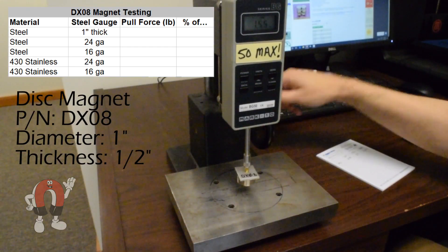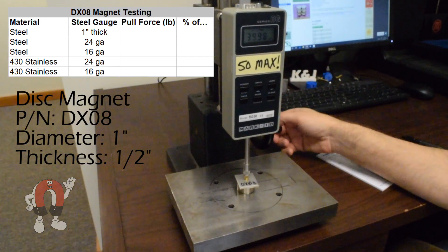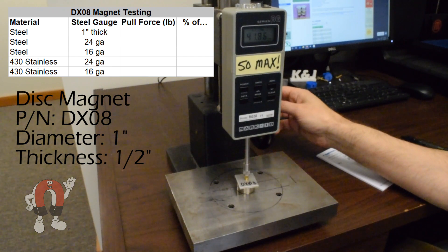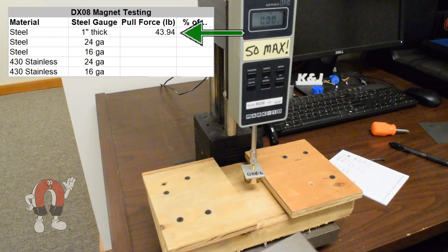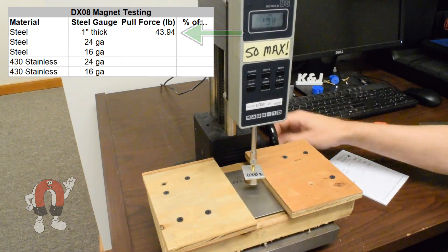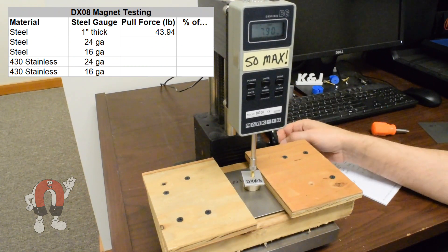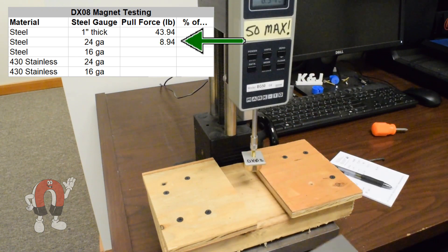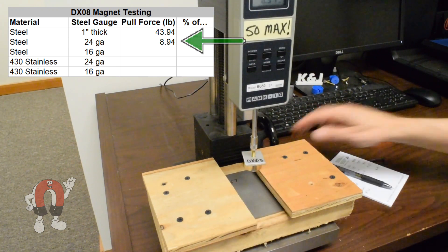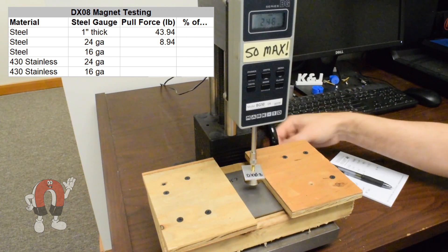Here we're testing a much larger magnet. This powerful disc is 1 inch in diameter by ½ inch thick. Pulling to the thick steel test plate, it reaches almost 44 pounds. To the thin regular steel, we see almost 9 pounds. To the thicker regular steel, we recorded about 24 pounds.